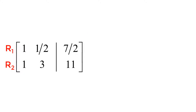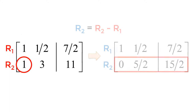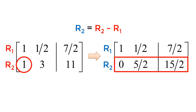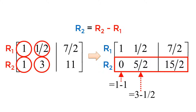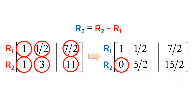The next step is to reduce the element in the second row and first column to 0. To make an off-diagonal element 0, use the 1 in the diagonal element of the same column as a pivot point, then make it 0 using the row adding operation. Since I have 1 in the second row and first column, I subtract the first row from the second row element by element. My new row 2 becomes: 0 (from 1 minus 1), five-halves (from 3 minus one-half), and fifteen-halves (from 11 minus seven-halves). The first column is now successfully reduced to 0.